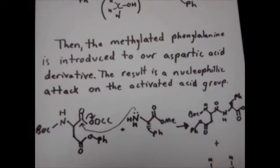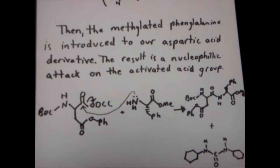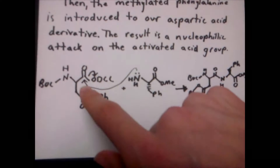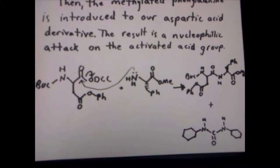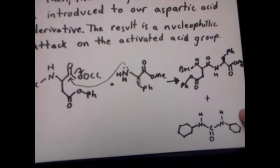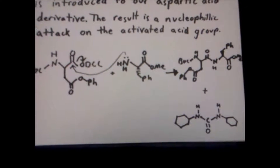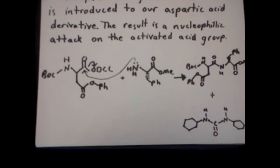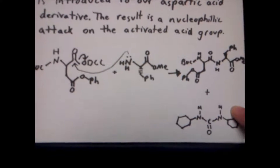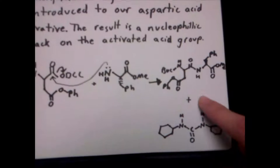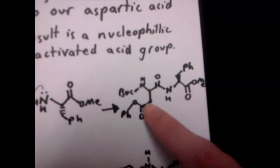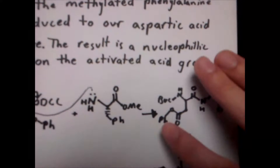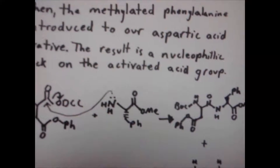Then the methylated phenylalanine is introduced to our aspartic acid derivative. The result is a nucleophilic attack on the activated acid group — the amine on phenylalanine attacks the DCC-activated carbonyl carboxylic acid. When it does this, DCC leaves as a DCC derivative byproduct, which is a waste product we don't need to recover. Our resulting compound is a dual-protected aspartame: the right side is already aspartame, but the left side still has protecting groups that we need to remove.